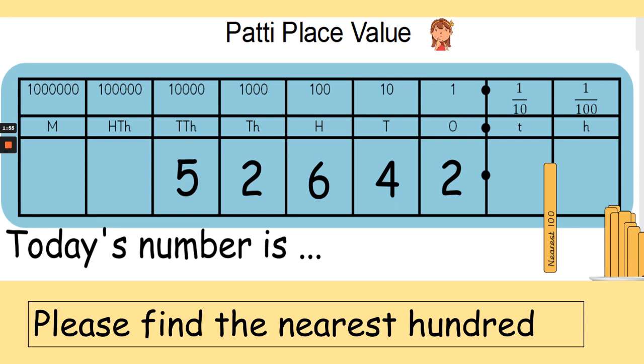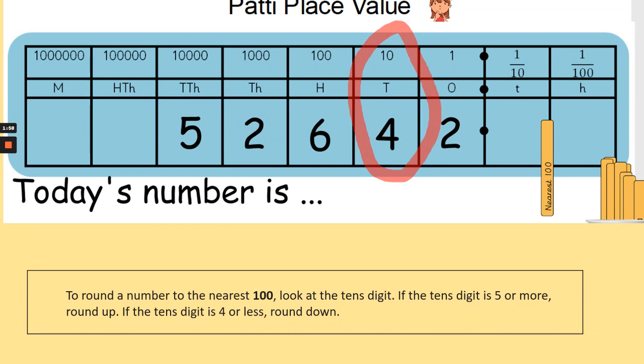Okay, let's see how you got on. So when we are rounding a number to the nearest 100, we need to look at the tens digit. Even though we're rounding to the nearest 100, you look at the tens to help you. It should be 52,600, as we've rounded down to 600, not up to 700.